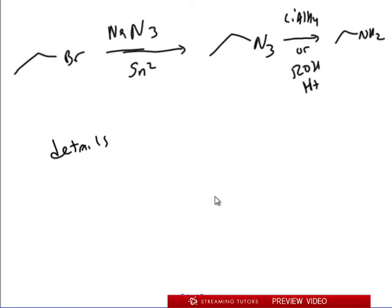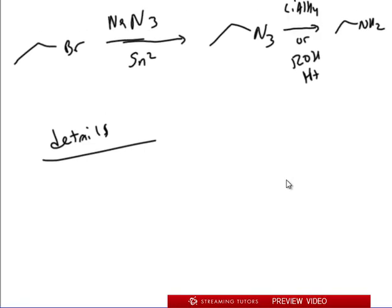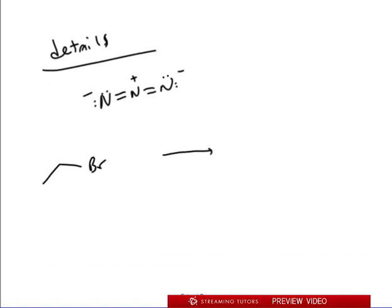Here are the details of the azide mechanism. First, you need to know the structure of N3: it's N=N=N, positive in the middle and negative on both ends, because it has two lone pairs. N3 negative reacts with an alkyl bromide in an SN2 fashion — one of the nitrogen ends comes in and the Br leaves, giving us an R group attached to N=N=N, where the first nitrogen is now positive and the last is negative.